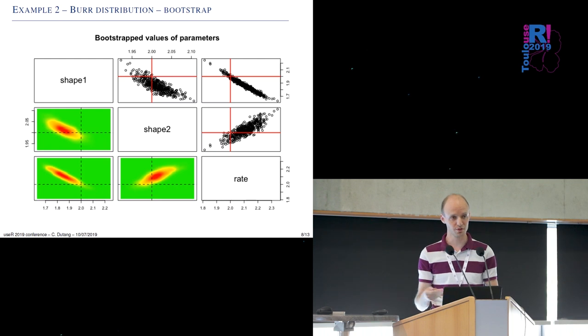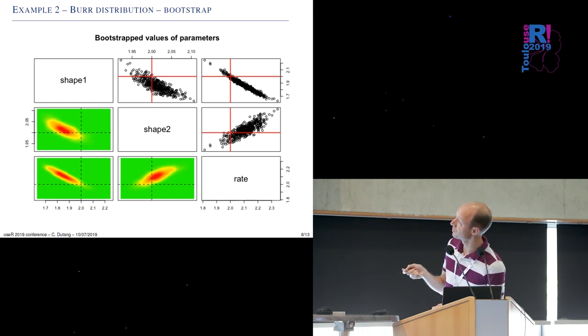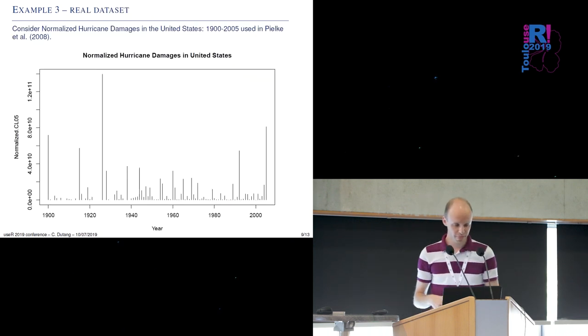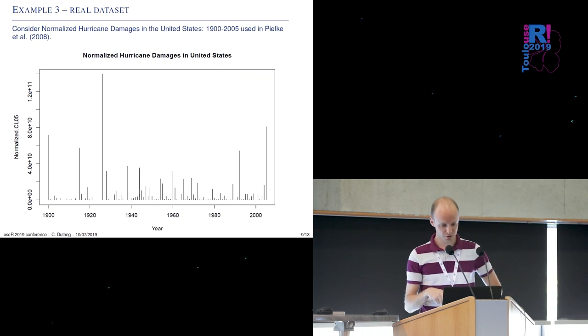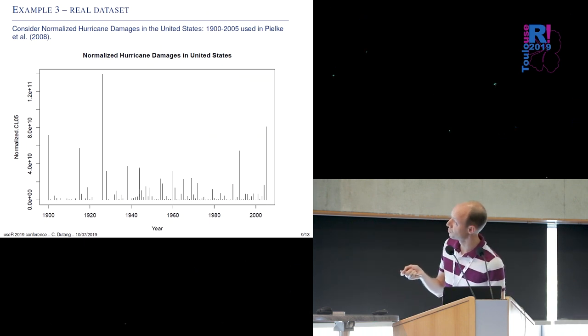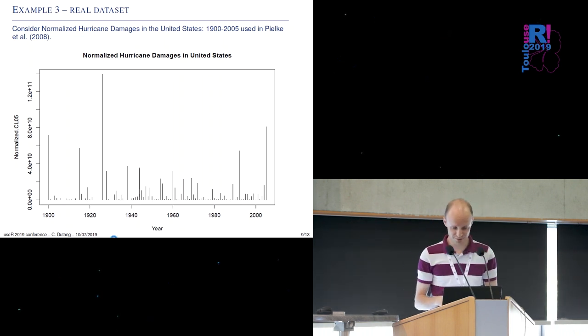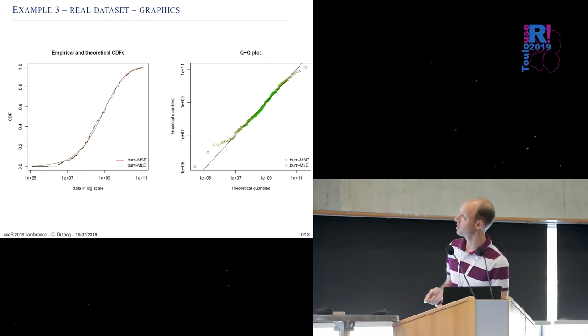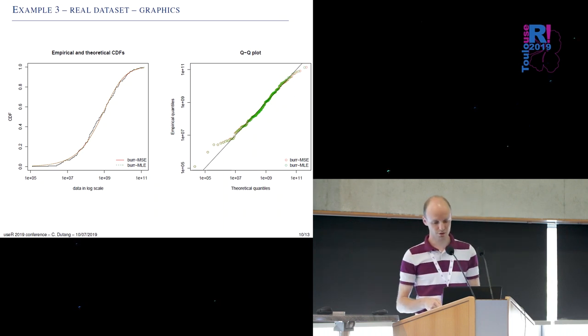And if we want to actually assess the potential bias in the estimation we can do the bootstrap which is already available in fitdistrplus just by using bootdist and actually here we can see how far we are from the true value which is denoted by the dotted line here. On a real asset set you can also perform quite well and so we consider numerical hurricane damage in Gulf states which is quite a famous data set and we select hurricanes between 1900 and 2015.